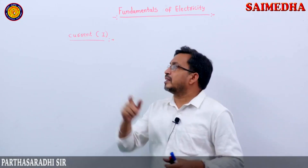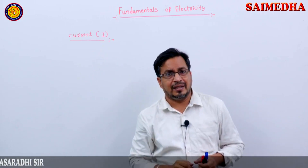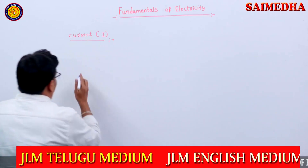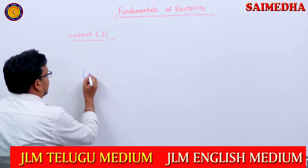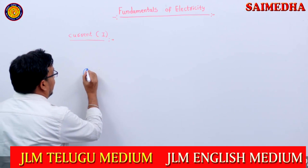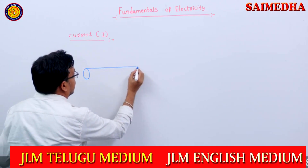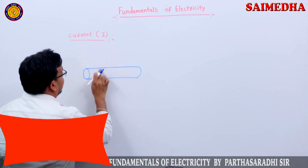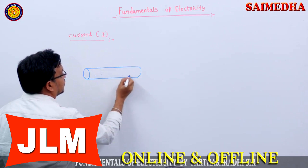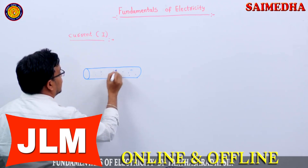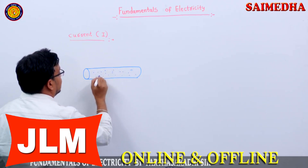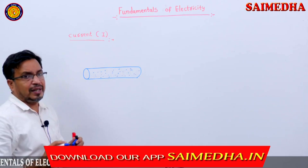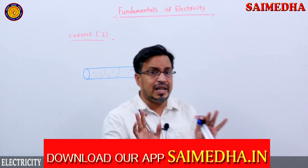Listen carefully. Starting current. What is the symbol of current? I. I am considering one conductor. This is one conductor. Conductors consist of some charged particles. The charged particles are stationary.